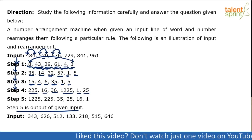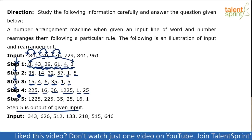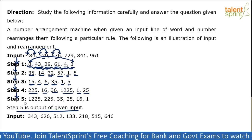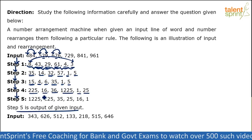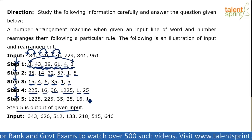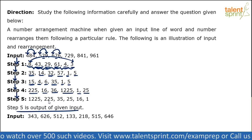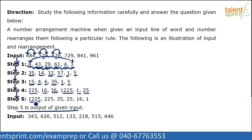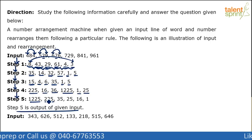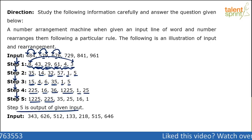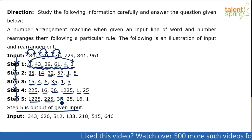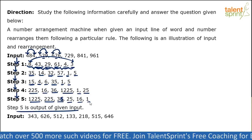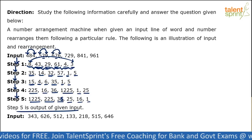Finally, step 5. The numbers in step 4 and step 5 are all the same: 225, 16, 36, 1225, 1, and 25. The only change is that the numbers have been arranged in descending order. The highest number 1225 takes the first position, followed by 225, then 36, then 25, then 16, and finally 1. So step 4 to step 5 is simply arrangement in descending order. Note: there was a correction — it should be 36, not 35.